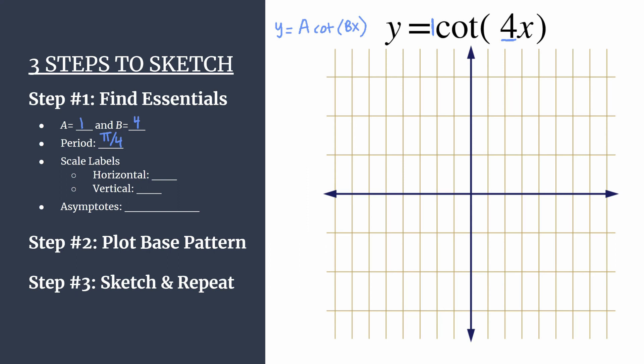Now we can think about our scale labels. You can label your tick marks for your axes however you like, but I think it helps to be really intentional about the horizontal labels. What I like to do is take the period and divide by four. So pi over four divided by four, same thing as times one fourth. We should use pi over 16 as our value for our tick marks. We'll count by increments of pi over 16. I do this because there are four key components in the base pattern, and choosing the scale like this will ensure that each of the pieces aligns nicely with the horizontal tick marks. It creates a nice, neat and accurate graph.